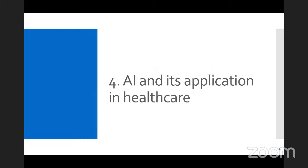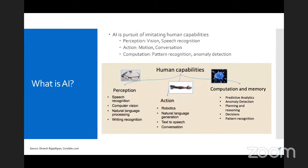We now move to the last section on AI and its application in healthcare. This will not be in-depth or technical. To me, AI is basically the pursuit of imitating human capabilities — in three categories: perception (seeing things, understanding speech), action (motor skills, moving and creating things, conversing), and cognition (recognizing faces or objects, finding differences between objects). These capabilities are being imitated by computers and software programs — that is what we call artificial intelligence.